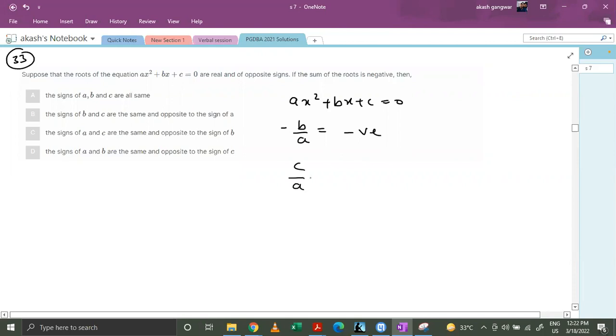Also, the product of roots is c by a, that also has been given negative because roots are of opposite signs. Now there are two cases: Case 1 and Case 2.